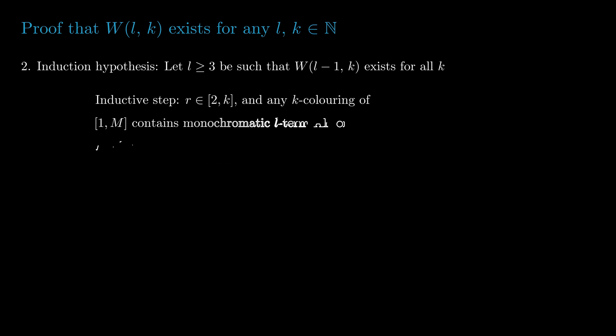For the induction hypothesis, we will pick r from the interval [2, k] such that if we color the interval [1, M] using k colors, we will get a monochromatic l-term AP or r - 1 spikes.